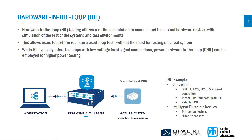Hardware-in-the-loop testing utilizes real-time simulation to connect and test actual hardware devices with a simulation of the rest of the system and test environment. This allows users to perform realistic closed-loop tests without needing to test on a real system. The real-time simulator runs the simulation and is connected to actual systems such as controllers — SCADA, EMS, GMS, microgrid controllers, power electronics controllers, or vehicle ECUs — as well as protection devices and smart sensors. This setup typically involves low voltage, low current signal-level connections, with the loop closed by measurements fed back from the actual system.